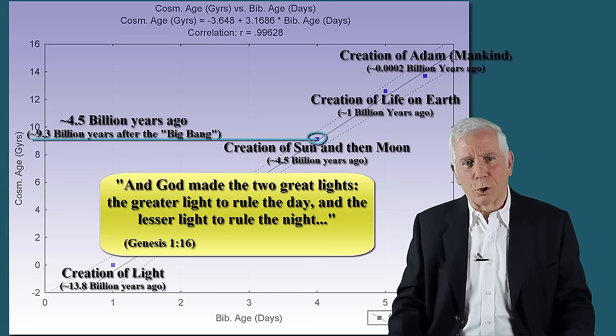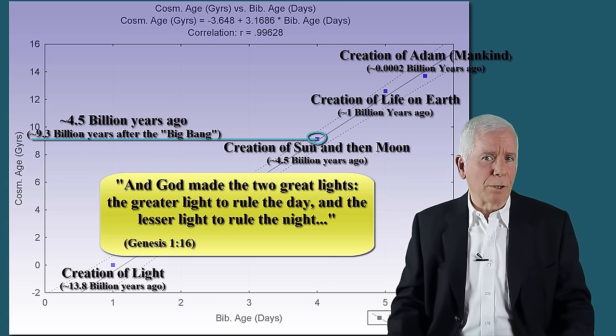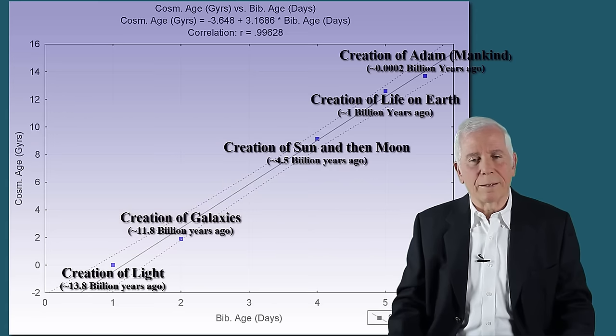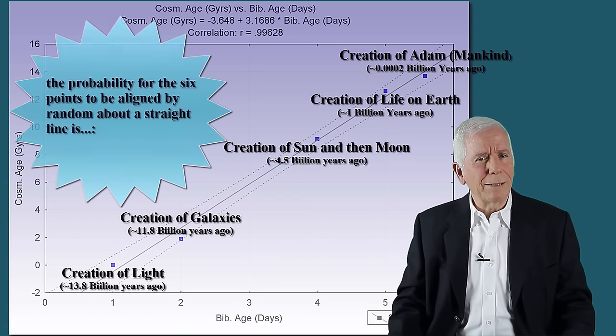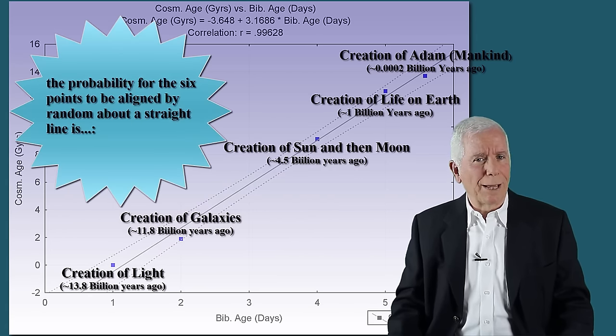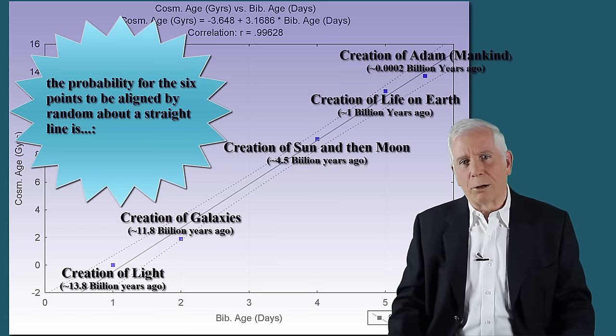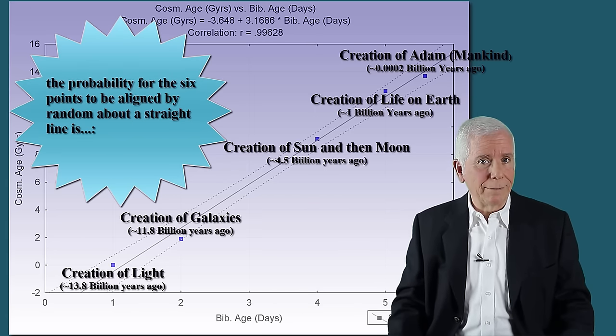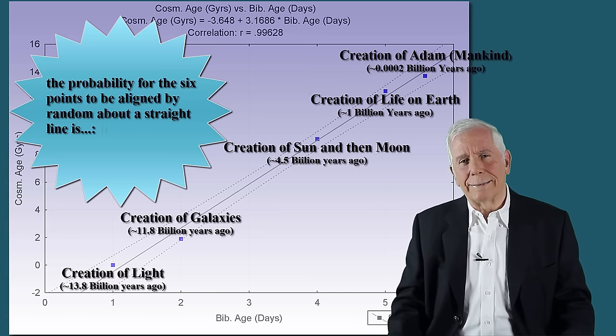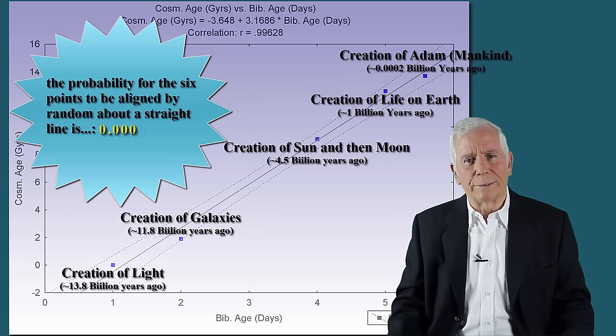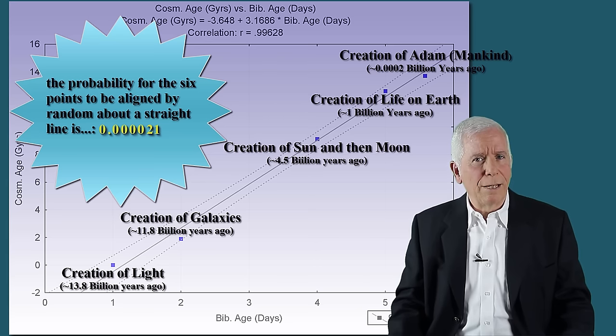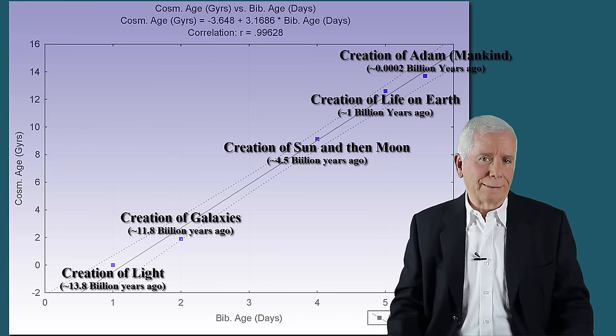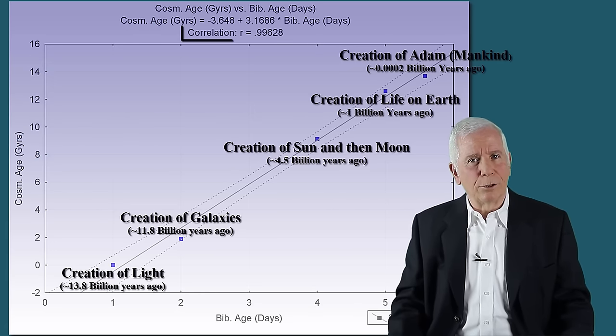However, because they are close, they are indistinguishable from one another. The probability for the six points to be aligned by random about a straight line, as they actually did, is 0.000021, namely, two thousandths of one percent. The resulting linear correlation is 0.9963.